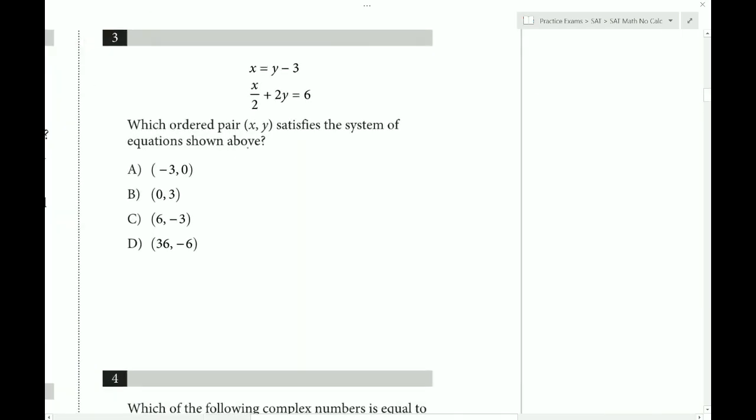Which ordered pair satisfies the system of equations shown above? So what we do here, we can do a substitution. We substitute this in for x because it's already isolated. So substitution is also known as isolate and plug in. If something is already isolated, that already saves you one step. So anyway, we plug in y minus 3 here.